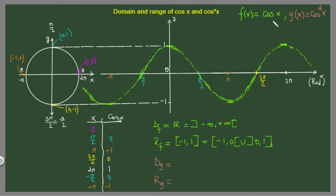I've already drawn out the cosine from the previous video. The domain was ℝ and the range was between minus one and one. We can also write the range as the interval from minus one to zero and zero to one, with zero included on both sides.